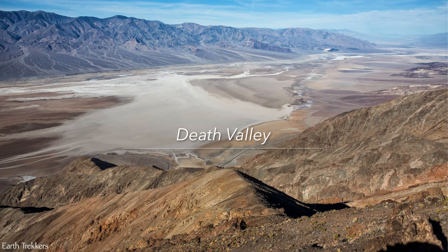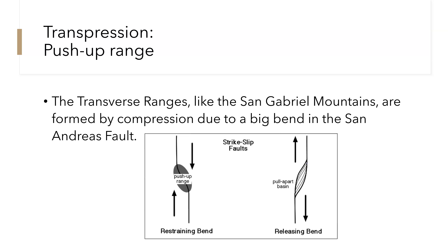This is what Death Valley looks like today. This is essentially the pull-apart basin in here, with faults on either side at the base of these mountain ranges pulling this tension zone apart. The Transverse Ranges, like the San Gabriel Mountains, are formed by compression due to a big bend in the San Andreas fault.